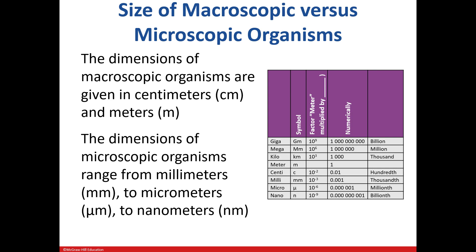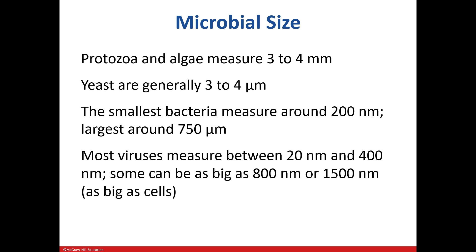Those organisms that we can see with the naked eye are usually in the size range of centimeters and meters, while microscopic organisms like bacteria are in the range of millimeters, micrometers, and nanometers. Here we can see the sizes of various microbes — our smallest being viruses, which are in the nanometer size range. Bacteria typically are in the micrometer range along with yeast. Protozoa are a bit larger.